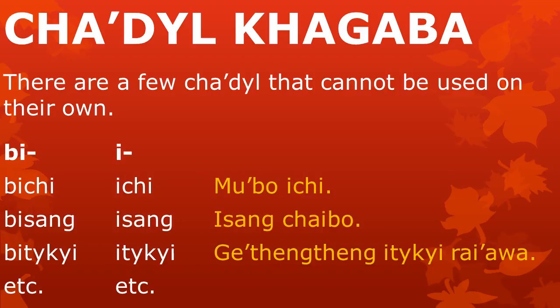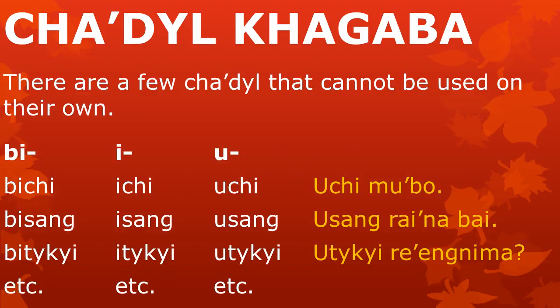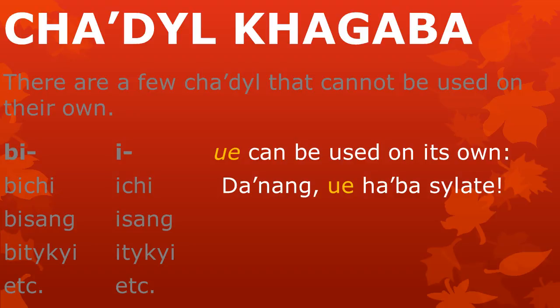Another tzadl that cannot be used on its own is 'i'. Combined with some pansok, we can make words like 'isang', 'ichi', and 'itkei', which we can use in a sentence. The tzadl 'iye' can be used on its own, as in the sentence 'datnang yejabektawa te'. The tzadl 'u' also needs some pansok — for example 'uchi' and 'utkei'. The tzadl 'we' can be used by itself in a sentence, as in 'datnang weha ba salate'.